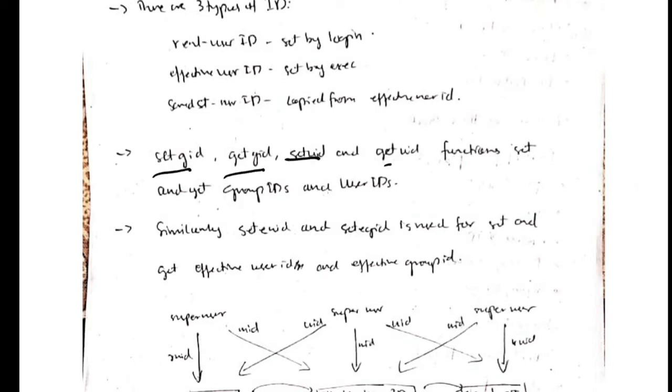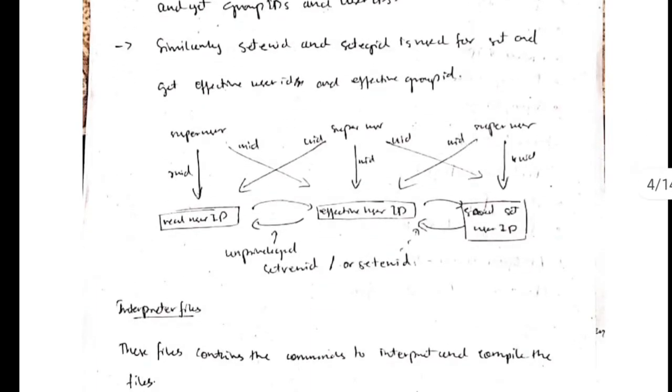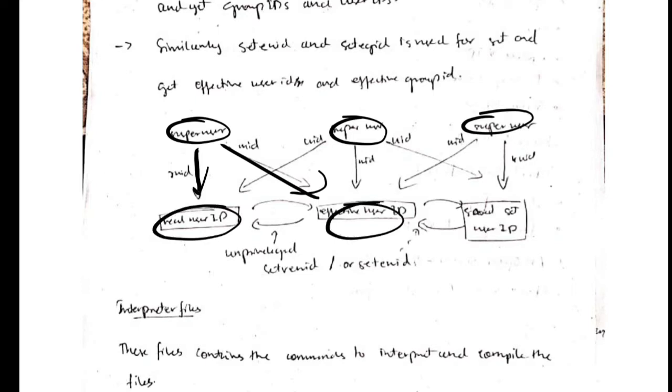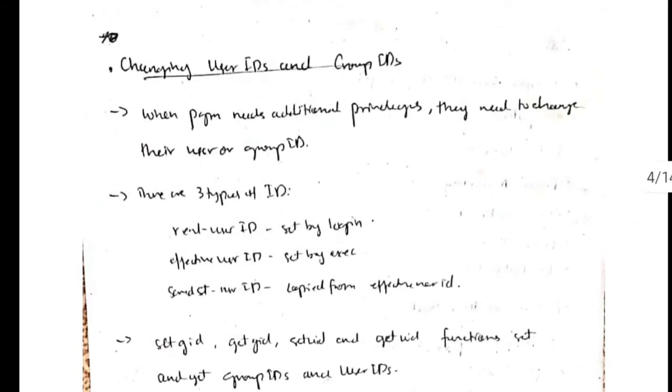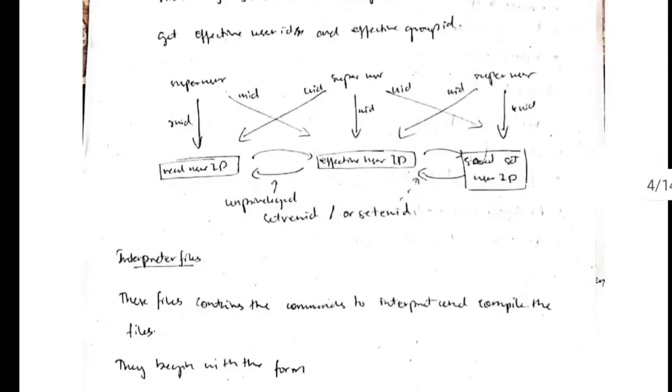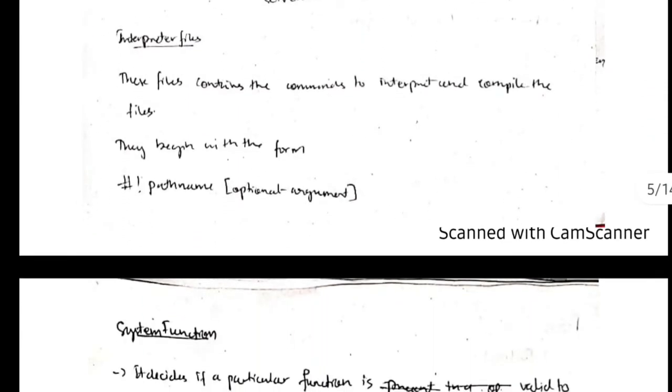When we have these three types of IDs, we can use some functions like setgid, getgid, or setuid, getuid functions to set and get the group IDs and user IDs. The super user, who is like the owner of the file, can perform the operations like set and get the different types of IDs, so by that we can change the permissions for the user and group IDs.